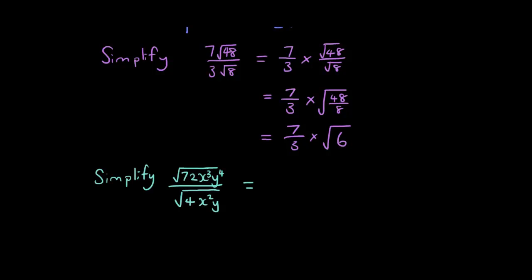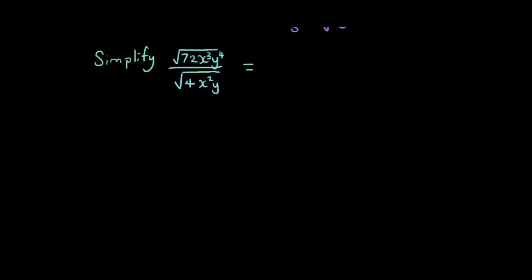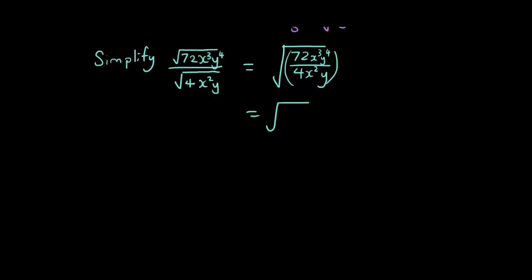Now let's try one involving some variables, which is a little bit more complicated. Feel free to have a go at it before I go through it. The first thing I'm going to do is combine everything into one big square root. So I have the square root of 72x³y⁴ over 4x²y. I can use the index law to simplify the inside fraction, ignoring the square root sign for a second. 72 divided by 4 is 18, x³ over x² is x, and y⁴ over y is y³.